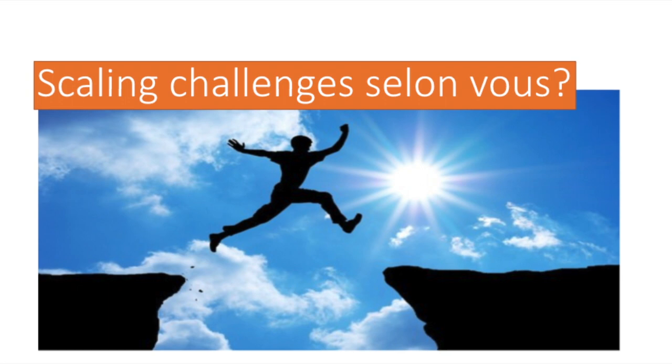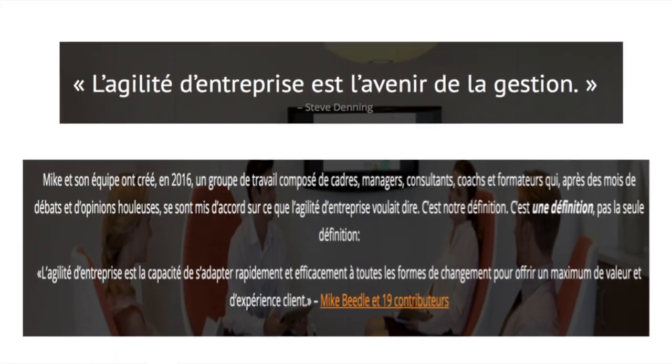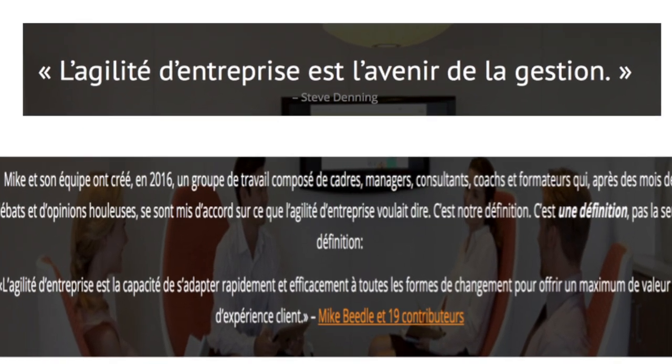Je suis très heureux parce qu'autant dans les groupes de New York et Chicago que le groupe que j'avais en français pour la première fois avec Desjardins, il n'y a personne qui a mentionné un framework ou un processus. C'était vraiment dans l'esprit. Scaling, ça nous amène à la proposition de définition, parce qu'il n'y a pas encore une seule définition — la communauté est encore en ébullition. J'aime bien faire ce lien entre le business agility et ce que Steve Denning disait : « Business agility is the future of management ». Dans la communauté internationale francophone, on est venu à la conclusion de traduire ça : l'agilité d'entreprise est l'avenir de la gestion.